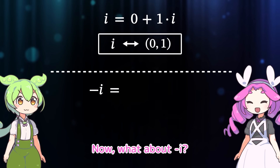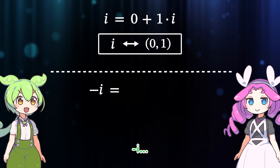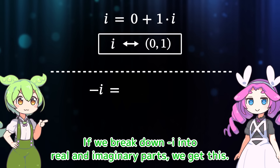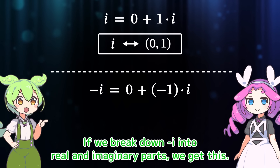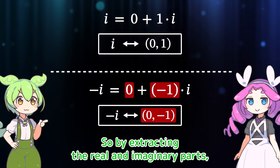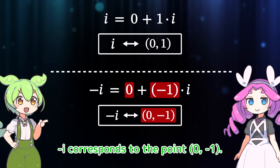Now, what about negative I? Same idea applies here too. If we break down negative I into real and imaginary parts: its real part is 0 and the imaginary part is negative 1. So, by extracting the real and imaginary parts, negative I corresponds to the point (0, negative 1).